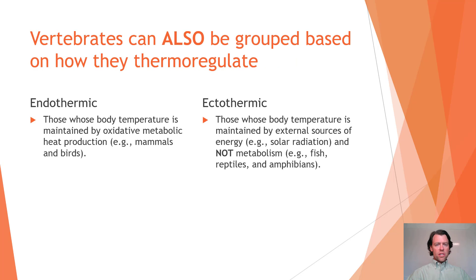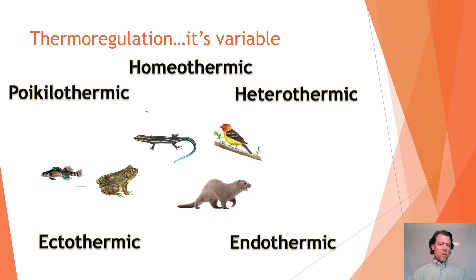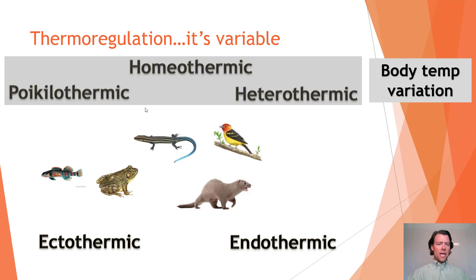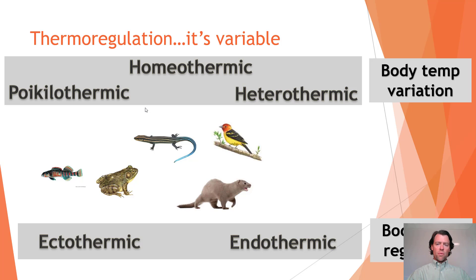Vertebrates can also be grouped based on how they thermoregulate: endothermy and ectothermy. Endothermic vertebrates maintain body temperature via oxidative metabolic heat production — typically mammals and birds. Ectothermic vertebrates maintain body temperature using external energy sources such as solar radiation, not metabolism — fish, reptiles, and amphibians. These terms relate to body temperature regulation, whereas poikilothermic/homeothermic/heterothermic relate to body temperature variation.